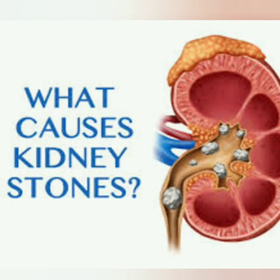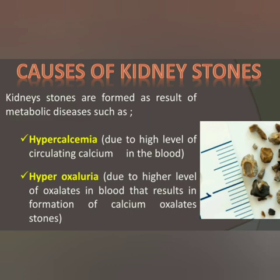Next are the causes of kidney stones. One reason is metabolic diseases — specifically hypercalcemia and hyperoxaluria. 'Hyper' means too much. If the calcium level in the blood is very high, we say the disease is hypercalcemia, and this can lead to crystallization of calcium. Similarly, hyperoxaluria means the oxalate level in the blood is too high, which can also cause calcium oxalate crystallization.